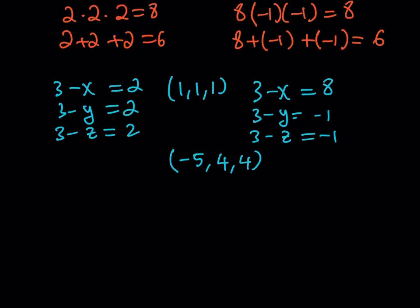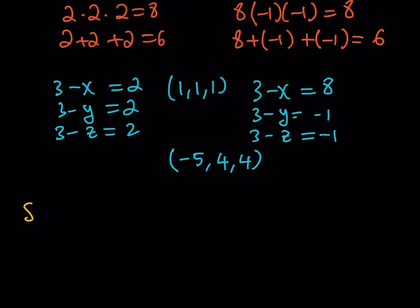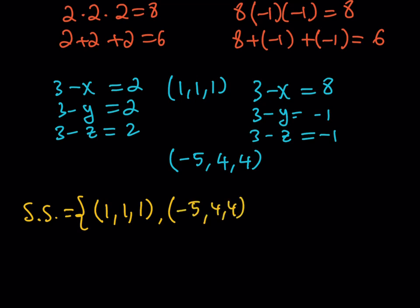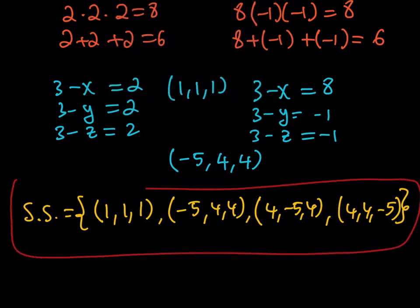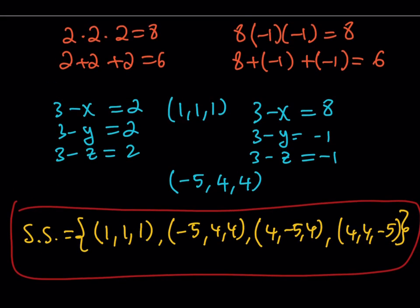So our solution set looks like this: we have 1, 1, 1. And then the other solutions are the permutations of negative 5, 4, 4 — that is, negative 5 comma 4 comma 4, then 4 comma negative 5 comma 4, and finally 4 comma 4 comma negative 5. These represent all the integer x, y, z values. That brings us to the end of this video. Thank you for watching — I'll see you tomorrow with another video. Be safe, take care, and bye-bye.